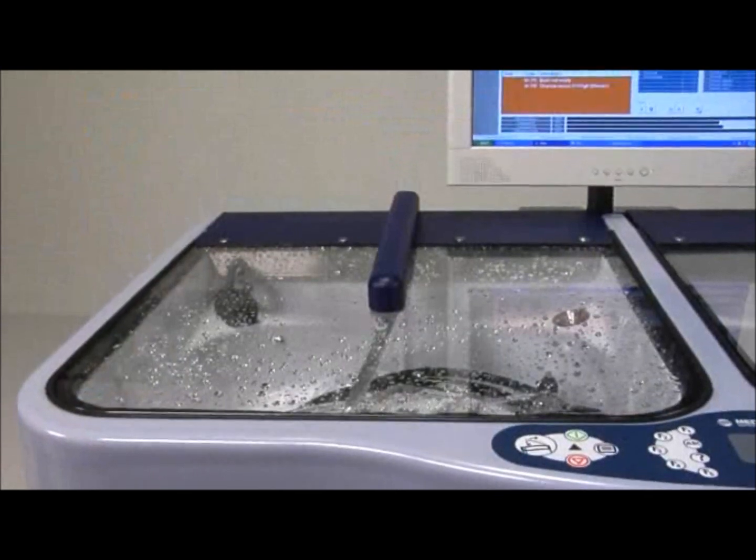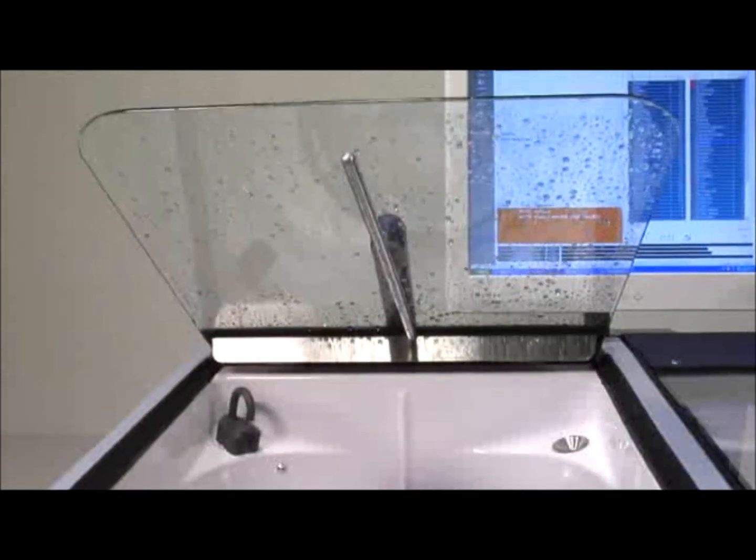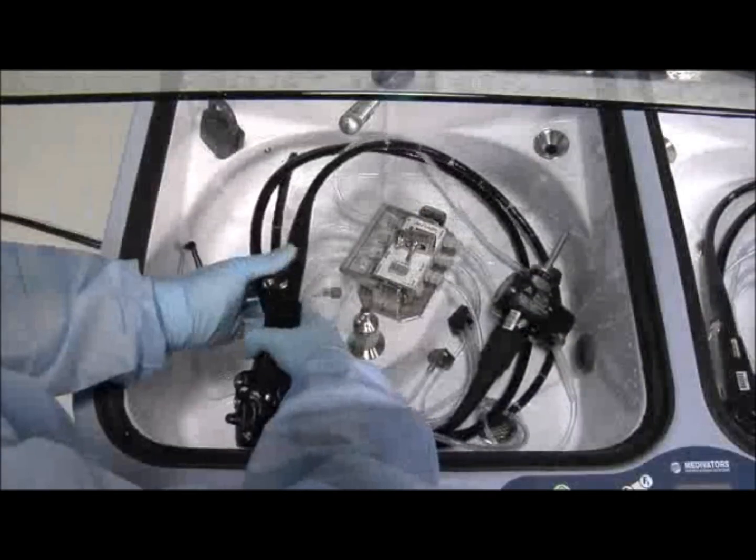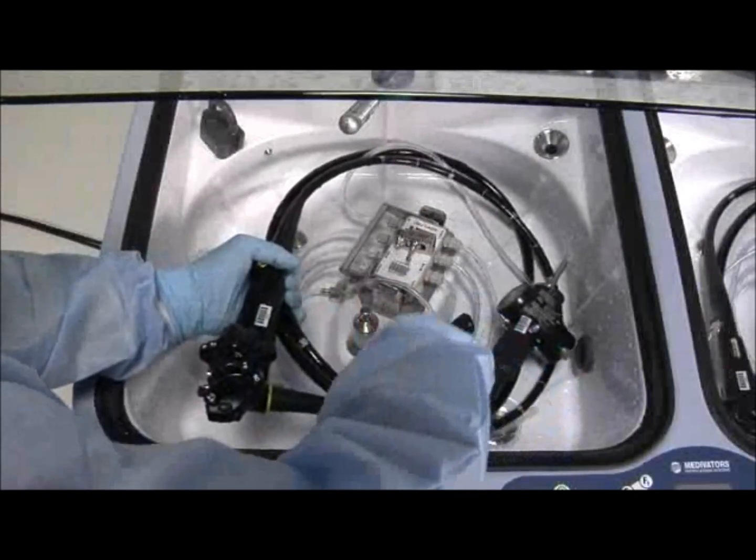Press the open close button or foot switch to raise the basin lid and scan your operator ID barcode. Disconnect all connectors from the endoscope.